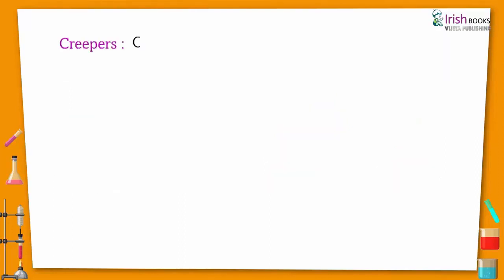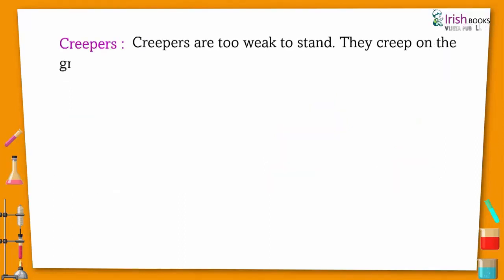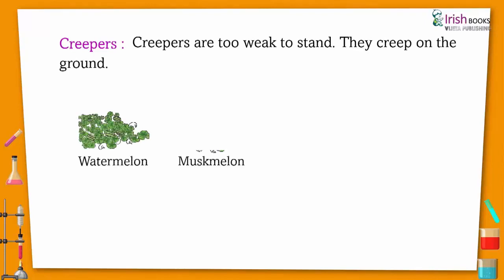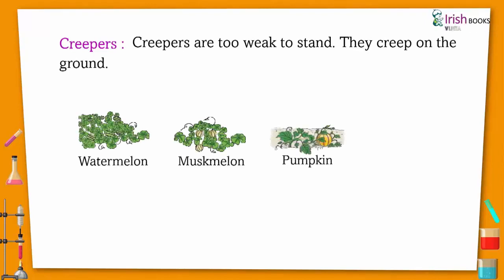Creepers. Creepers are too weak to stand. They creep on the ground like watermelon, muskmelon, pumpkin, gourd.